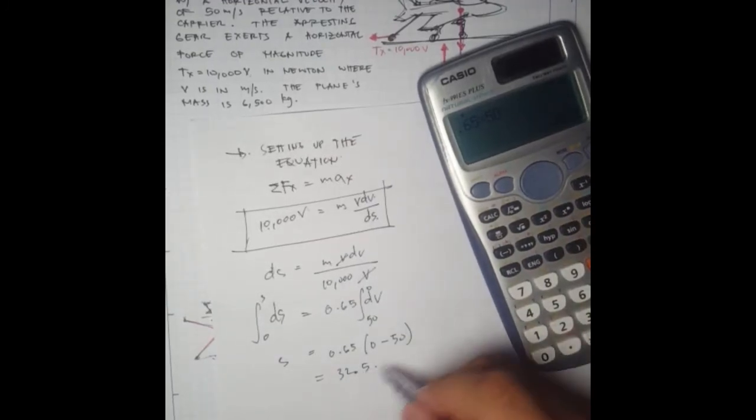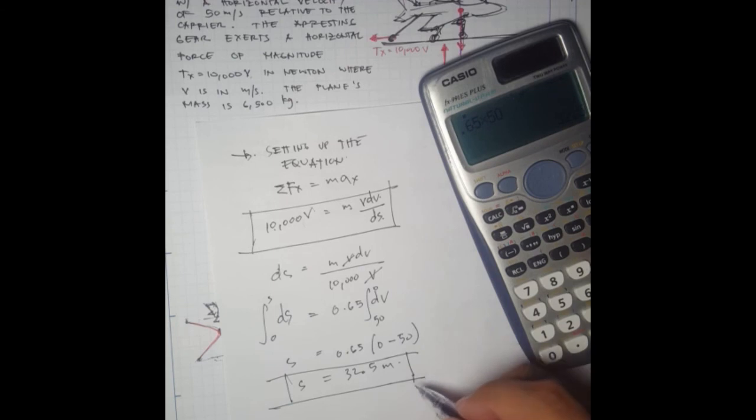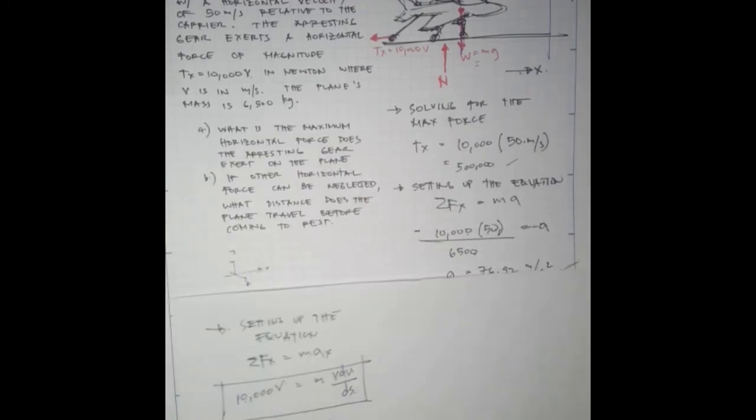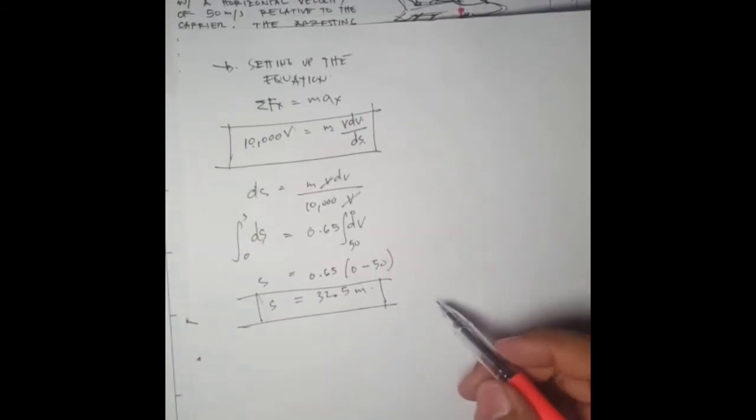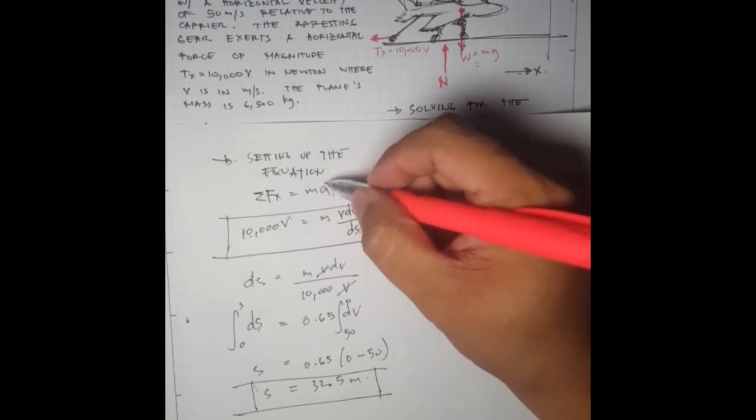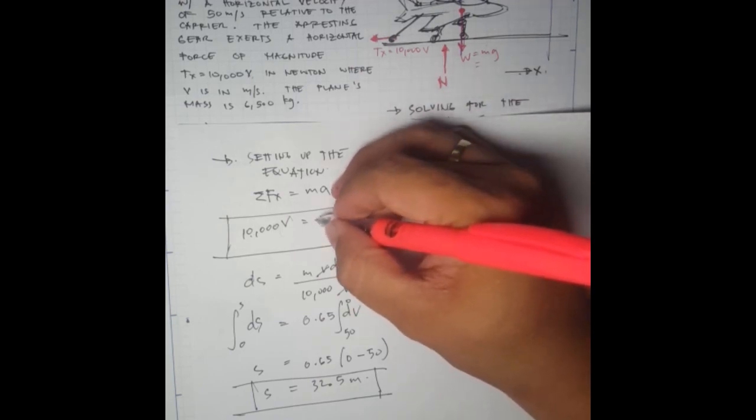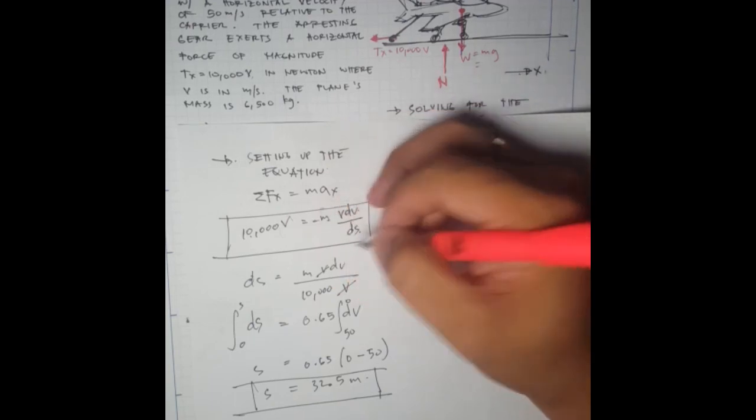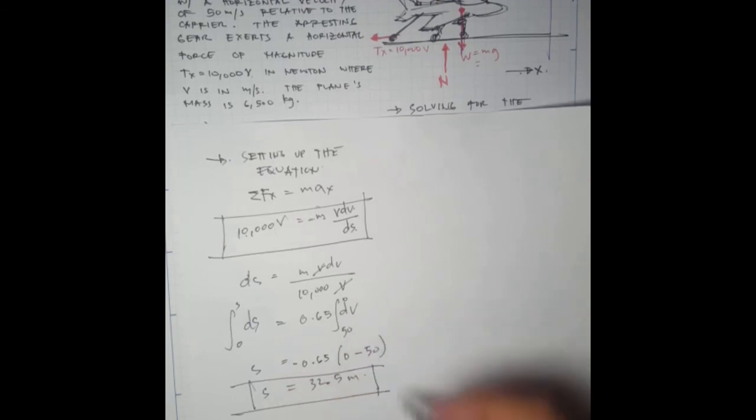There's a negative sign here, but the answer from the book is 32.5 meters. The acceleration is negative, so it should be negative over here. I guess the solution has negative throughout, so if you multiply negative times negative times negative, it's just positive here.